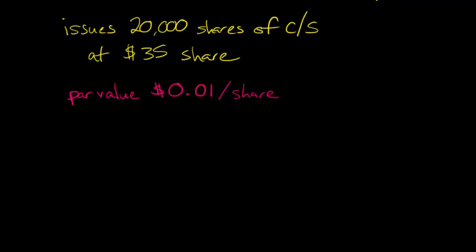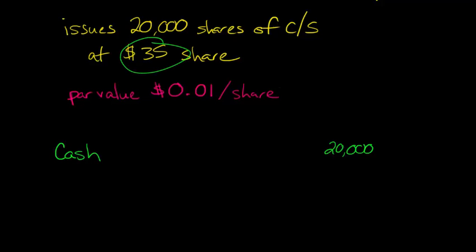Sometimes in a journal entry, just think about what's going on with cash — that's easiest to figure out. We know that we issued 20,000 shares of stock and we got $35 a share for it, so there's going to be a debit to cash. We're going to take the 20,000 and multiply that by the $35 a share, and that's going to give us a debit to cash of $700,000.